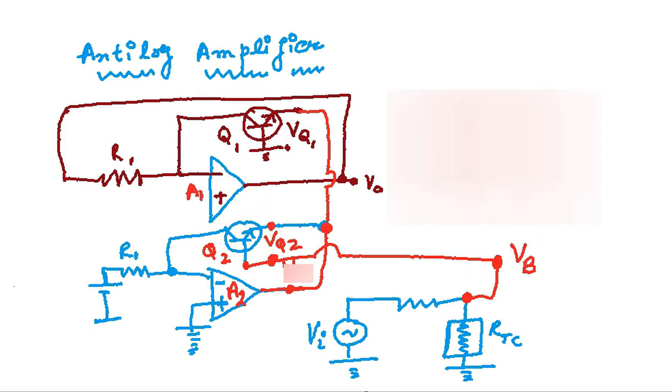So here voltage is VB, and VQ2 is the voltage between the emitter and the base of Q2.